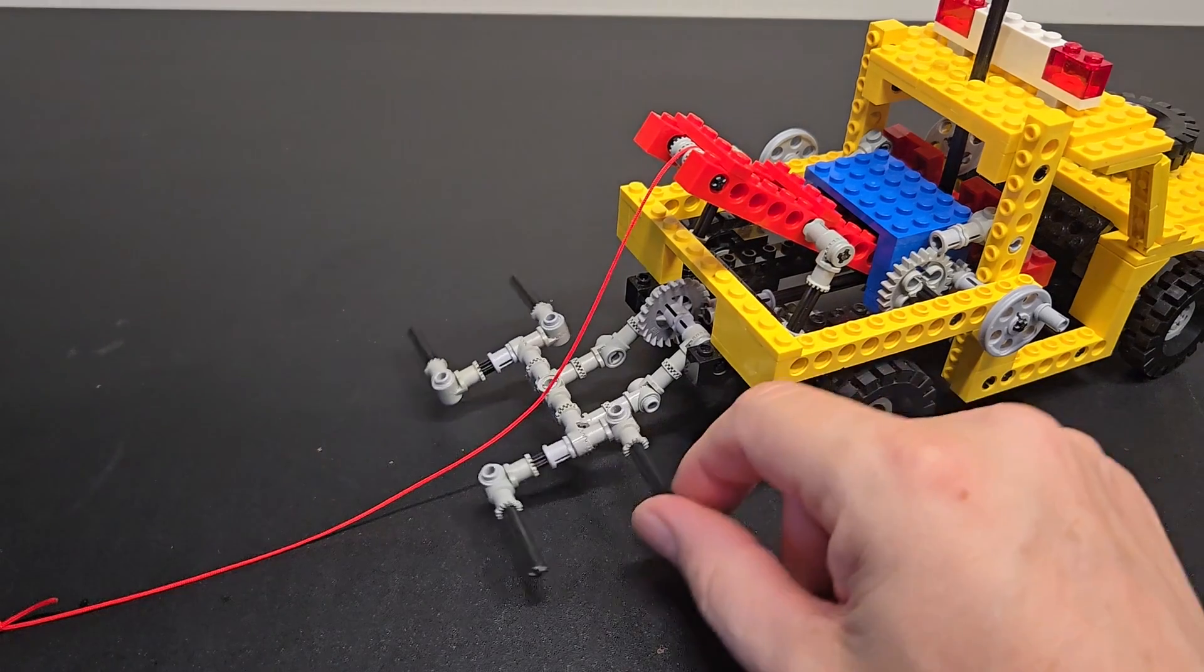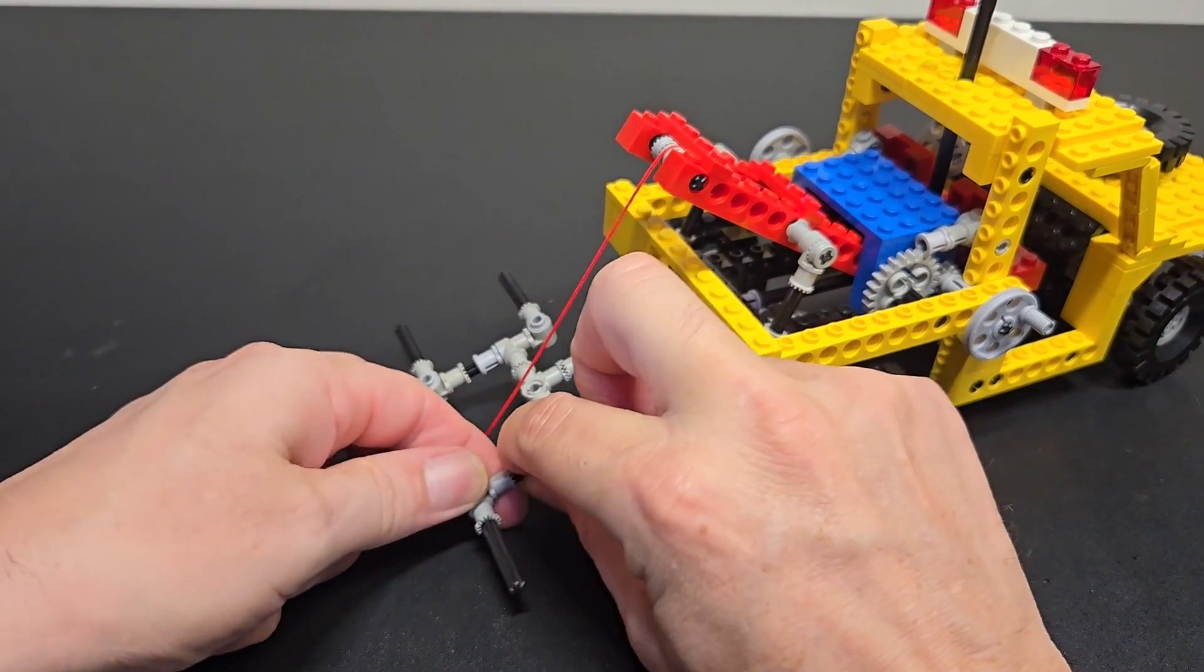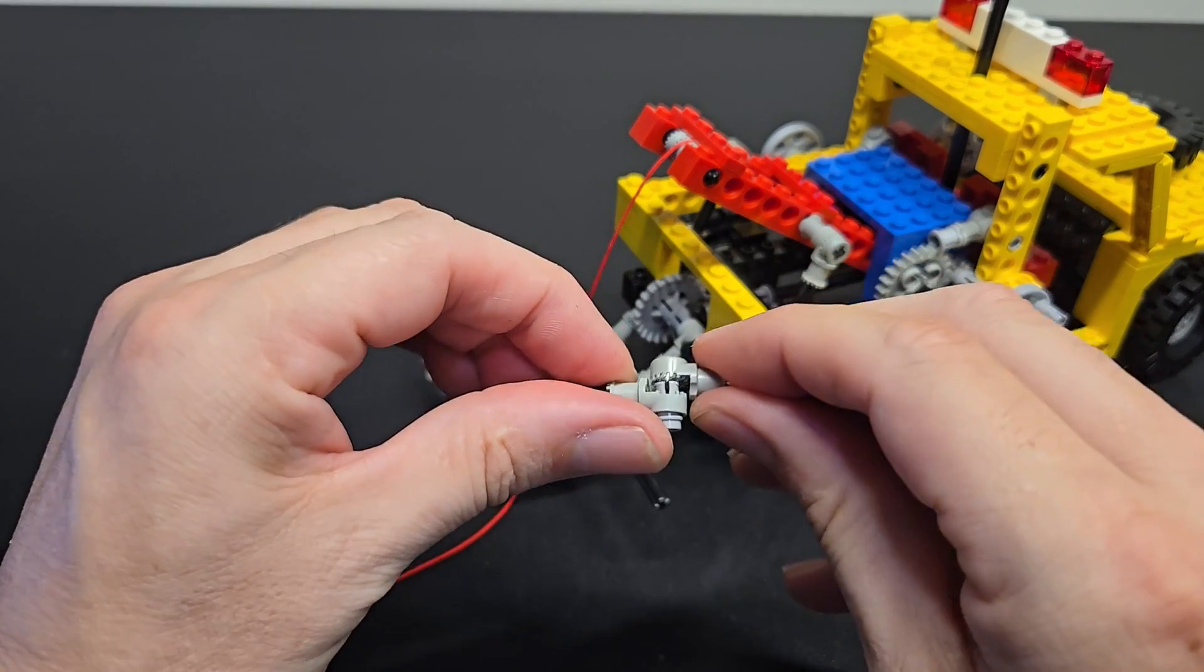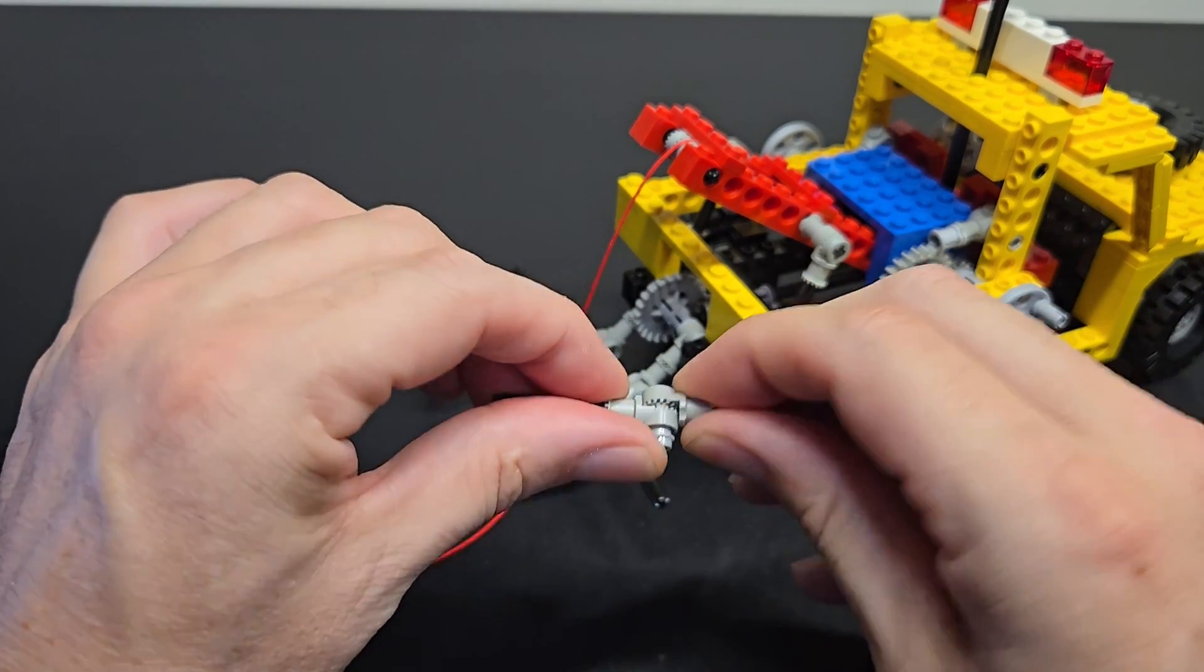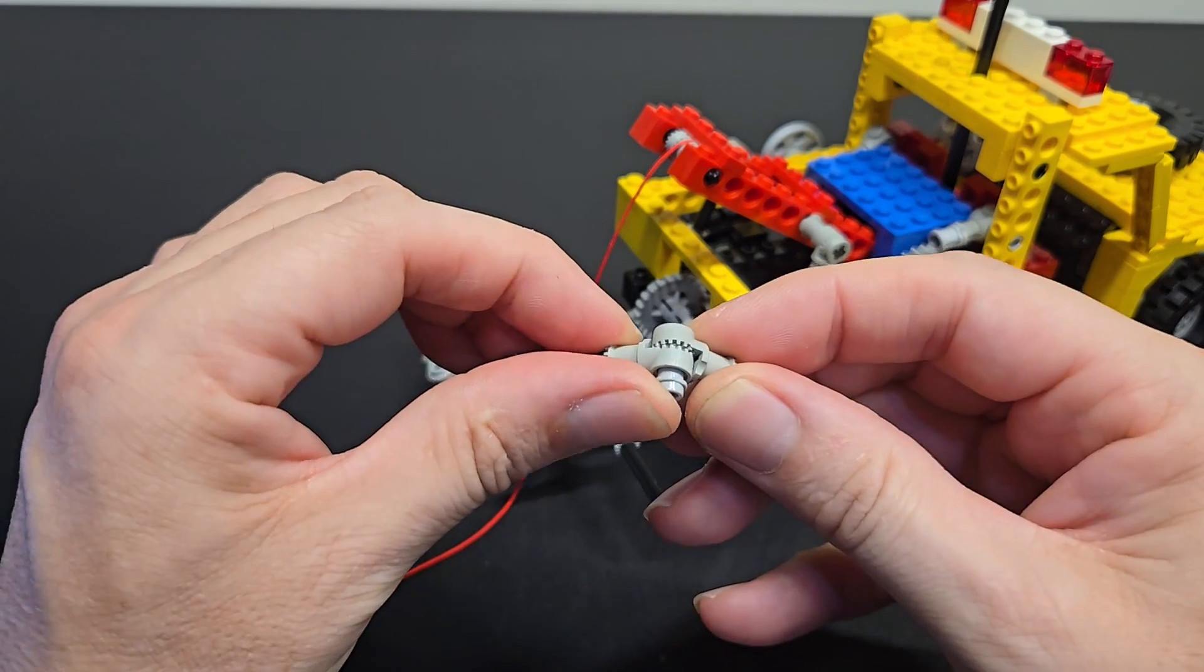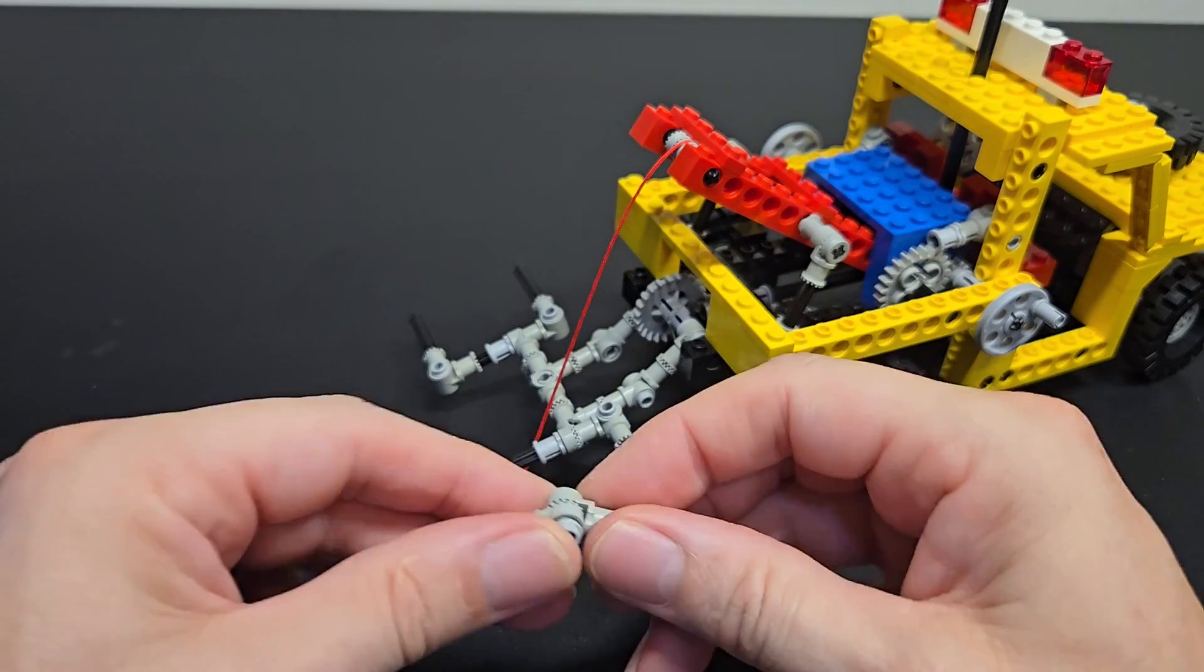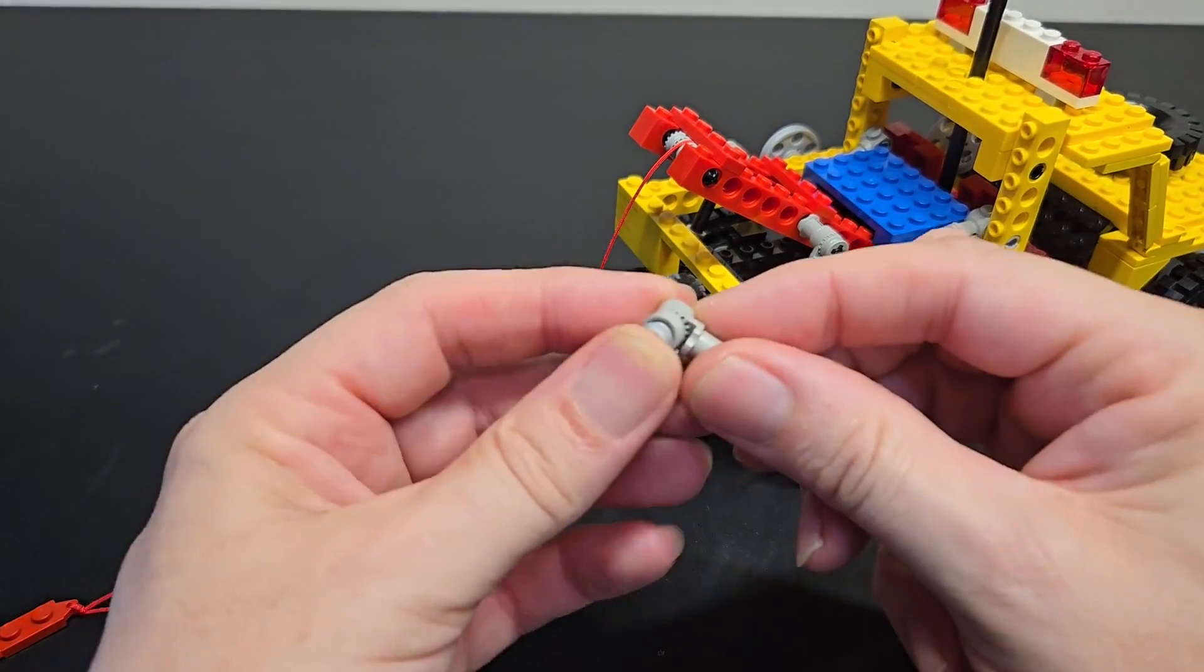These old style connectors, if you take a closer look, they're split in half, and you can select which angle you want to configure them at. And they're a little bit delicate. They didn't always survive that long.